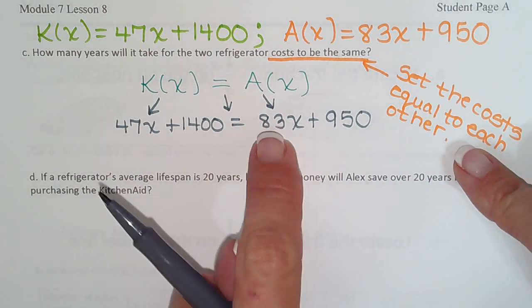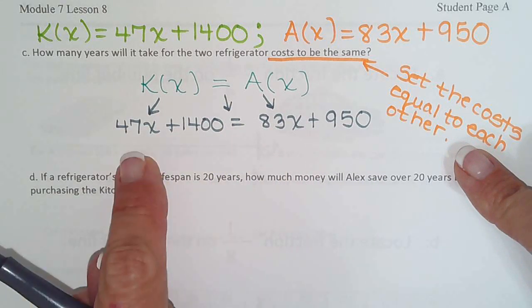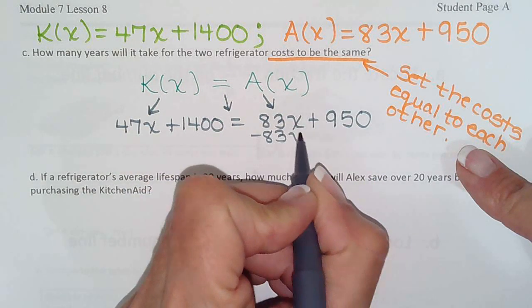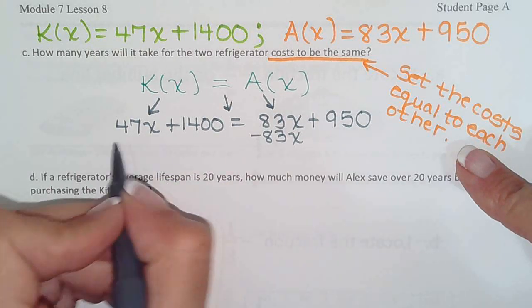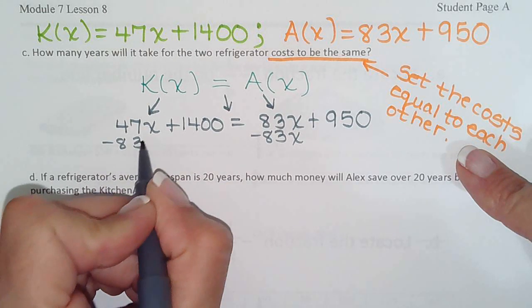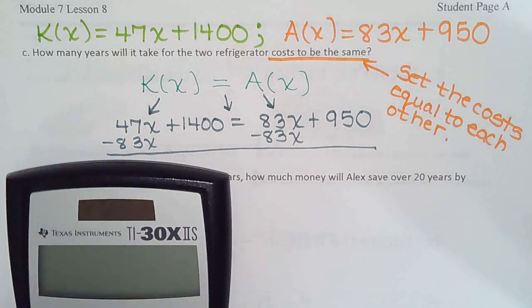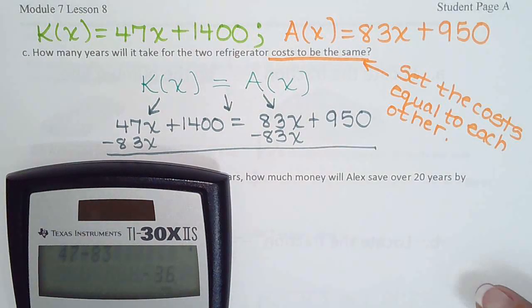So we need all of our X's on the left, so that means we're going to have to subtract 83X, and of course you could bring them over to the right if you wanted. And 47 minus 83 is negative 36.